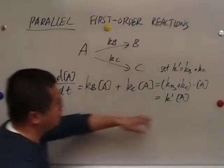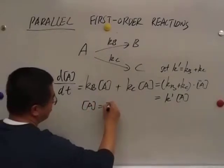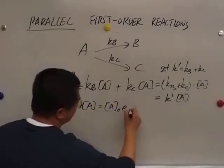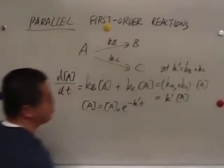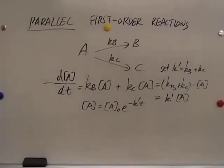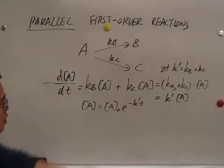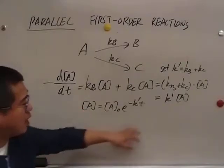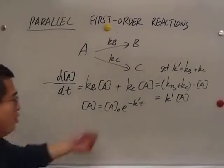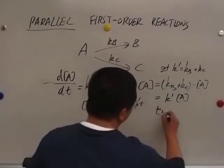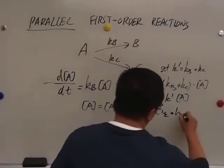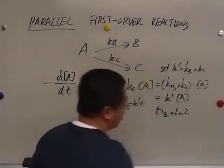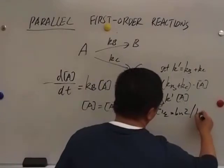How do we solve this? We just separate the two variables and then we integrate both sides from time zero to time t. That's the concentration of A at any given time t. And you can even get the half-life. The half-life is the natural logarithm of 2 divided by K prime.